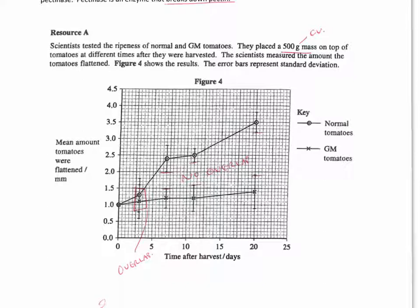So question 1, what conclusions can you make from this graph? So both of them flatten more as the time after harvest increases, and you would expect that because hopefully you know that as they get older, they're going to get riper, so they're going to be squashier. You can see that one here, as time goes on, this goes up slightly, this one goes up as well, so both flatten more as time after harvest increases.